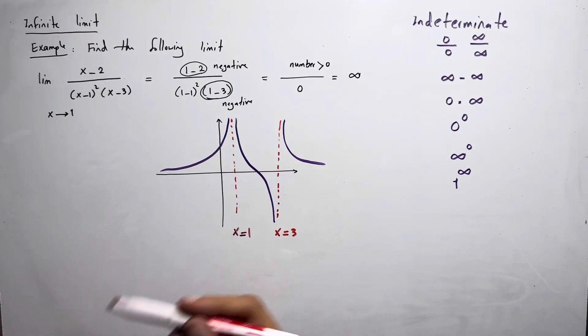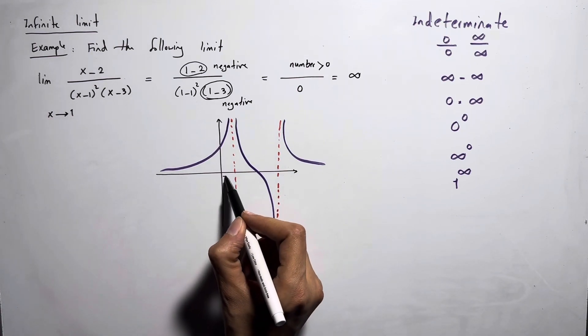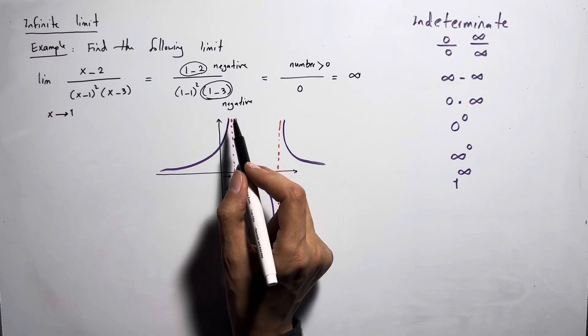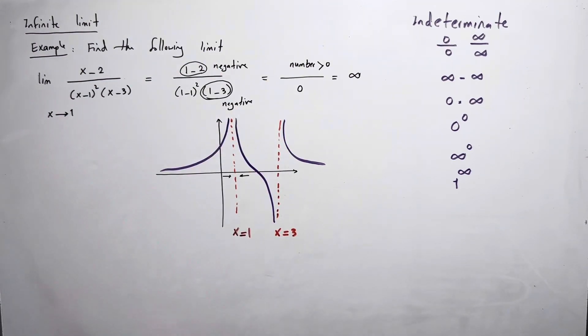So as x goes to 1 from left or from right, as you can see, the graph of the function grows to positive infinity. This is a part of the graph.